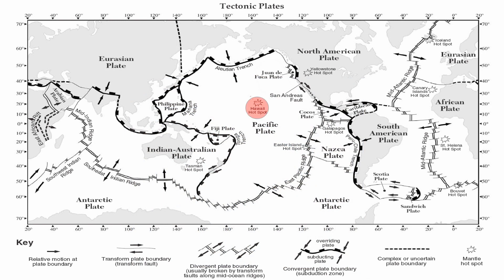Hawaii is not the only hotspot — you have a bunch of them, including the Tasman, Easter Island, Galapagos, Yellowstone, Beauvais, Canary Island, Iceland, and the St. Helena hotspot. A lot of those hotspots are found away from plate boundaries, which means the magma pocket is feeding active volcanoes as the plate moves over top of it. You have a symbol in the bottom right-hand corner showing what a mantle hotspot would look like.